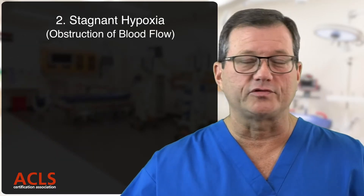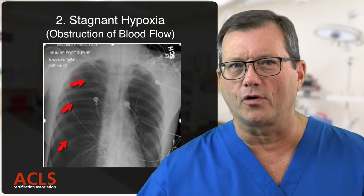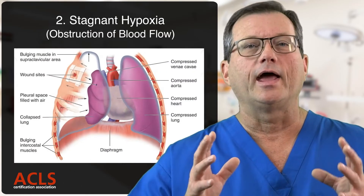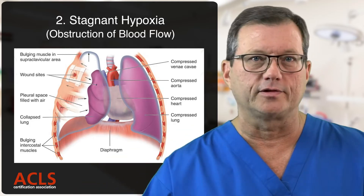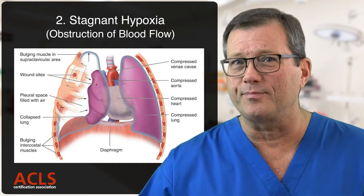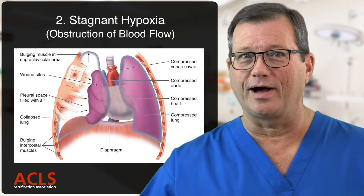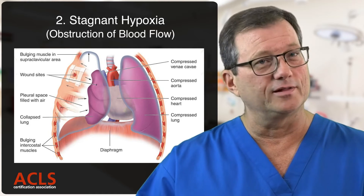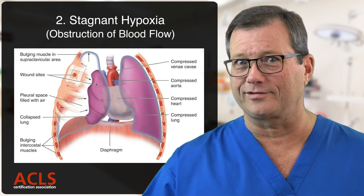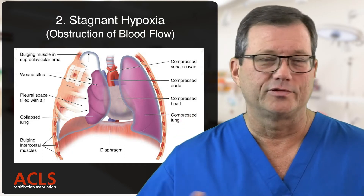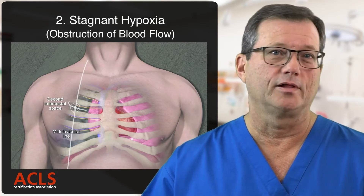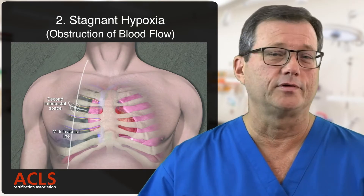Another case of stagnant hypoxia is a tension pneumothorax. The tension is pushing on the inferior vena cava and obstructing blood flow back to the heart — that blood becomes stagnant, that venous blood is not moving forward. Is it hypoxic hypoxia also? You betcha. If that lung collapses, they're not taking in enough gas, so you have a combo: hypoxic hypoxia and obstructive stagnant hypoxia. The treatment, of course, is pleural decompression — decompress the chest, allow that lung to open up and get the pressure off the inferior vena cava.